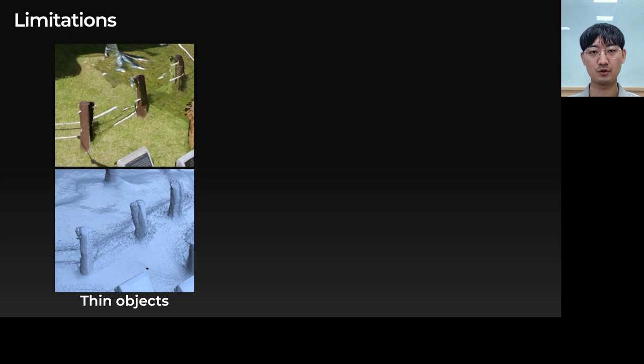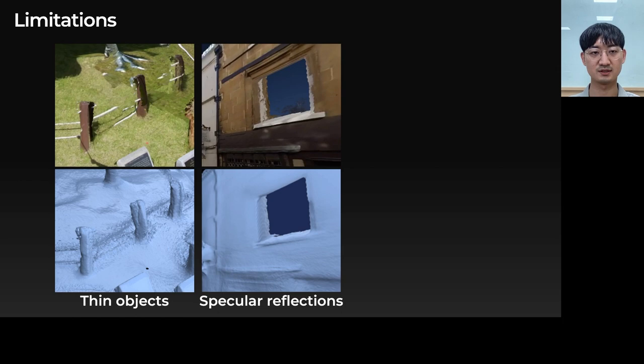Our method is not free from limitations. It sometimes fails for thin object reconstruction. This is because depth estimates from our fine-tuned optical flow network are not accurate enough for the thin structures. Similarly, specular reflections lead to inconsistent depth estimation, which our passive stereo method cannot handle. To increase depth accuracy, fusion with long-range depth sensors such as LiDAR might be helpful.